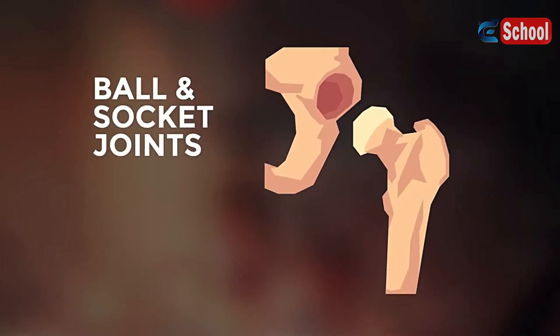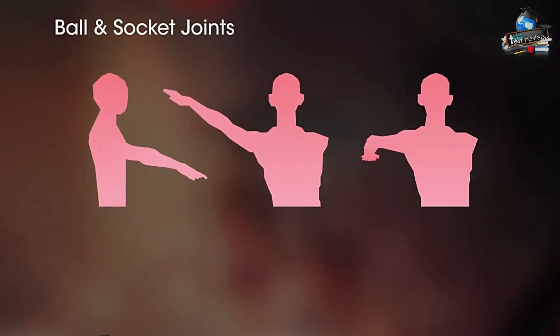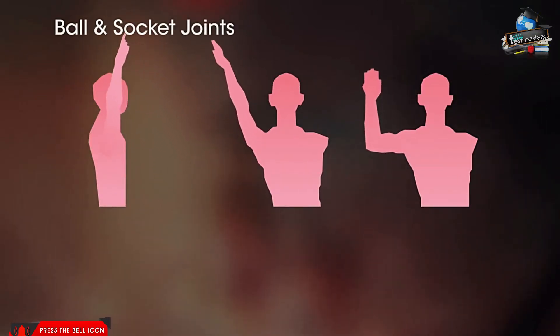As the name says, they all have a ball-like shape at the end of the bone which fits into a cup-like socket. These joints have the highest amount of movement, which allows lots of rotation.